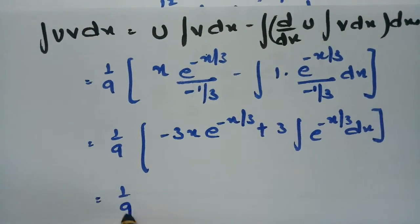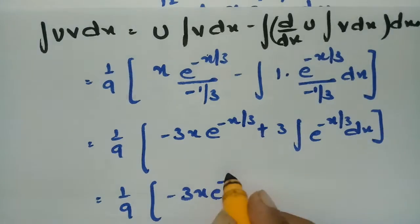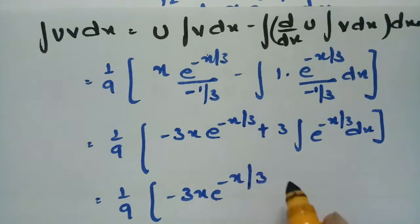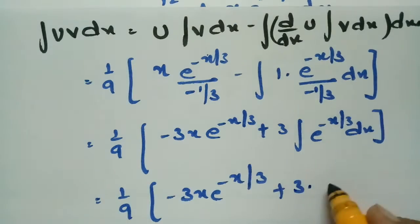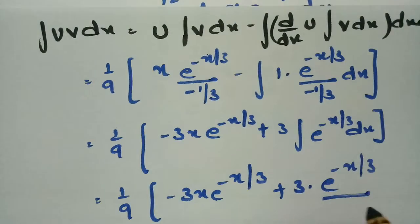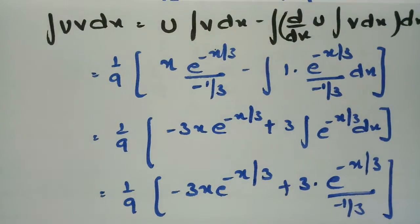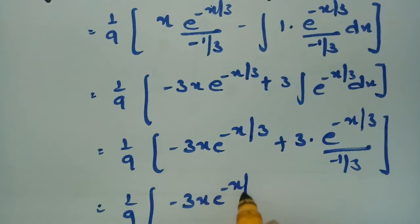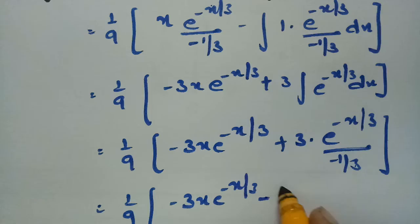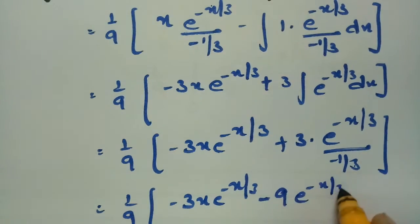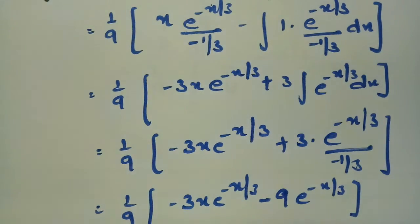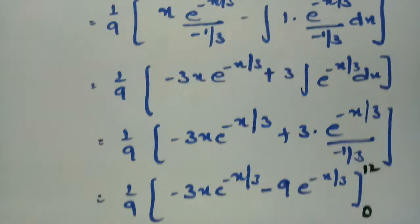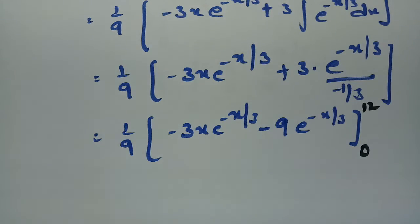So this becomes (1/9) times [−3x·e^(-x/3) + 3·∫e^(-x/3) dx] between limits 0 to 12. Integrating e^(-x/3) gives −3e^(-x/3), so 3 times that is −9e^(-x/3). The expression becomes (1/9)·[−3x·e^(-x/3) − 9e^(-x/3)] evaluated between limits 0 to 12.